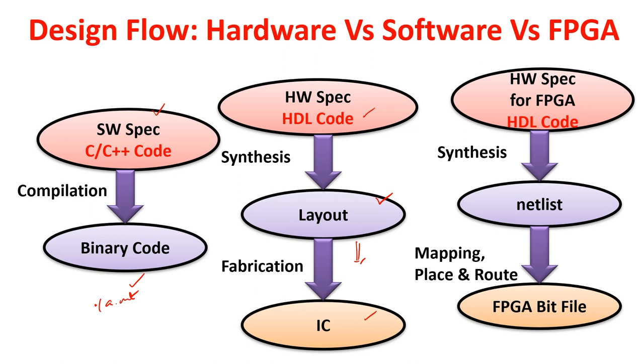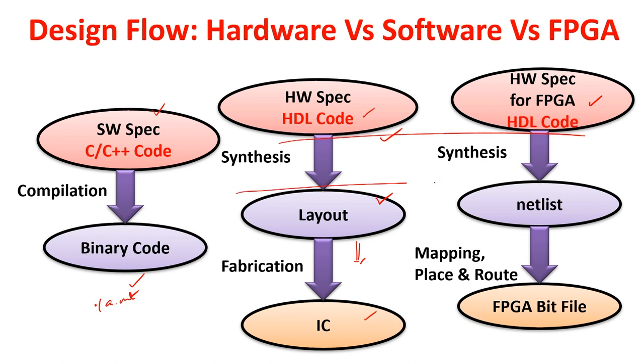Since FPGA is configurable hardware, we can run any digital design on FPGA. In the FPGA flow, the HDL code and synthesis steps are almost the same as for IC design. Here, instead of a layout, you get a netlist. From this, the process is mapping, place and route, which requires input/output constraints because FPGA has a specific set of I/O ports. After mapping and place-and-route, a bitfile is generated. Once we download the bitfile to FPGA, it will act as our design.